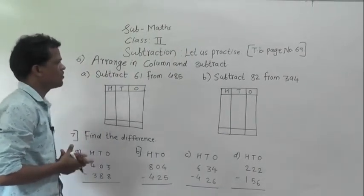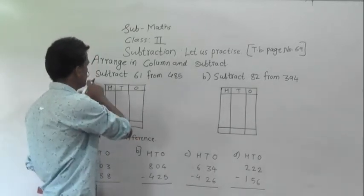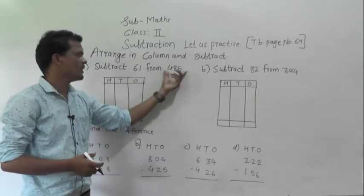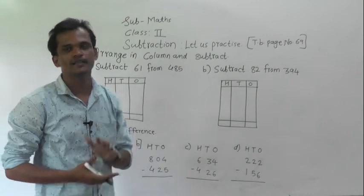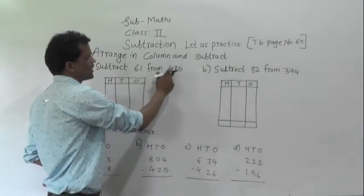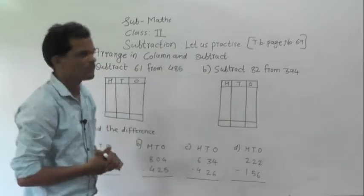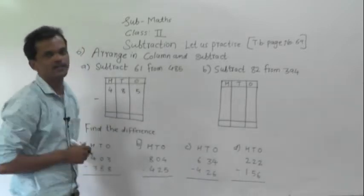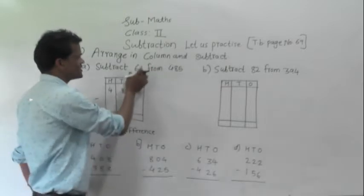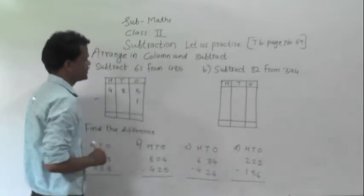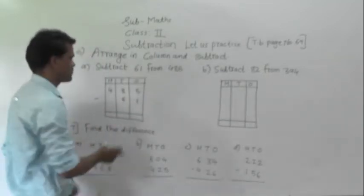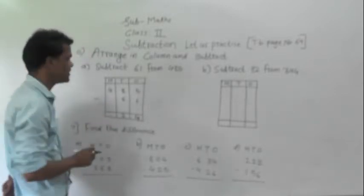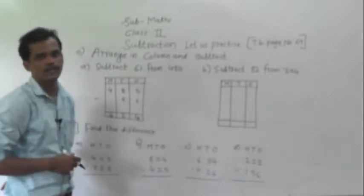Example number 6: arrange in column and subtract. First, subtract 61 from 485. One important thing: always write the bigger number on top and the smaller number below it. So between 61 and 485, the bigger number is 485. Write 485 on top and 61 below, starting from the ones place — 1 in the ones column and 6 in the tens column. Now subtract: 5 minus 1 is 4, 8 minus 6 is 2, and for hundreds there is no digit so consider 0, giving 4 minus 0 is 4. So the answer is 424.